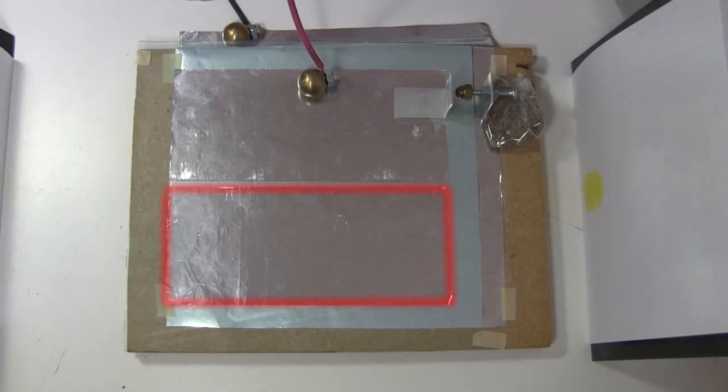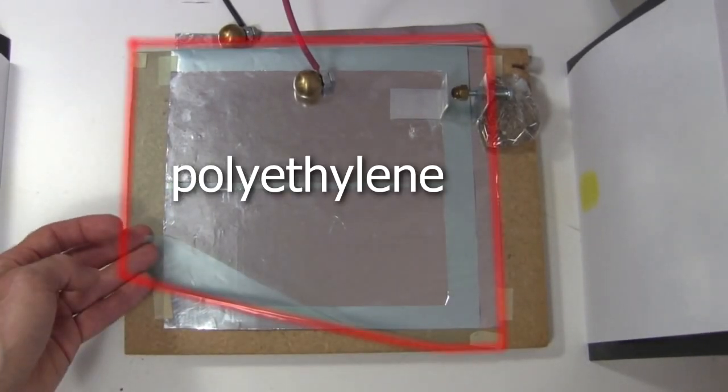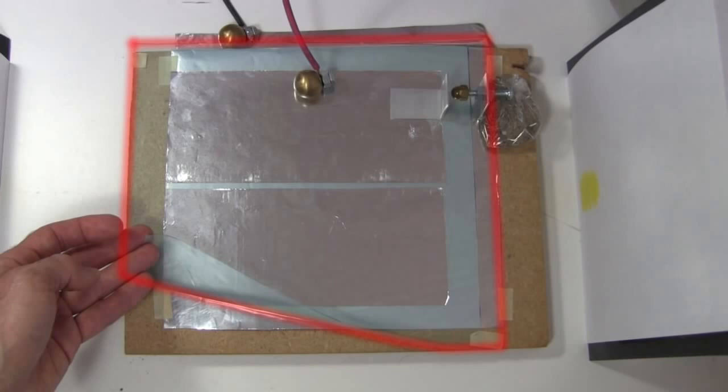One is formed by this small sheet of aluminum foil, the dielectric, which in this case is a sheet of polyethylene, and the larger sheet of aluminum foil under that. The second capacitor is this small sheet of aluminum foil, the same sheet of polyethylene, and the same larger sheet of foil underneath.